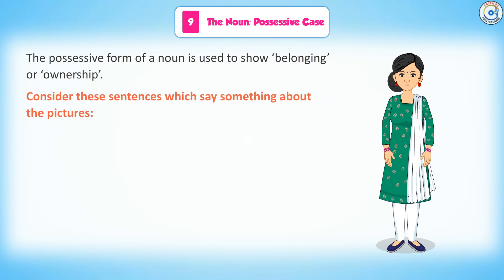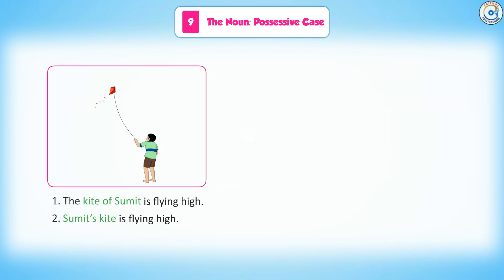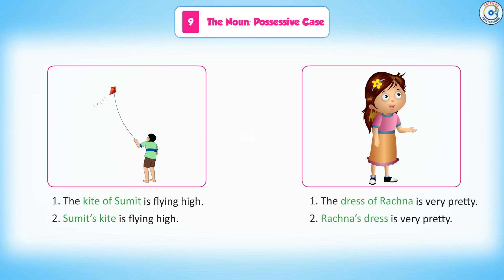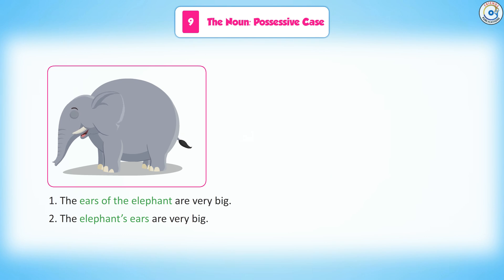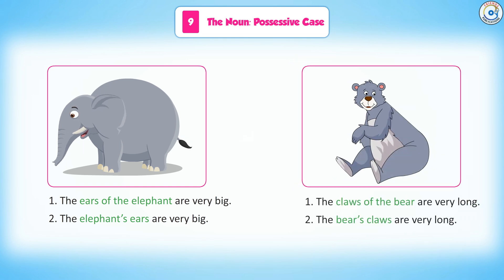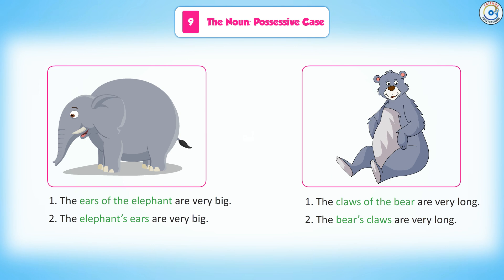Consider these sentences which say something about the pictures. The kite of Sumit is flying high. Sumit's kite is flying high. The dress of Rachna is very pretty. Rachna's dress is very pretty. The ears of the elephant are very big. The elephant's ears are very big. The claws of the bear are very long. The bear's claws are very long.